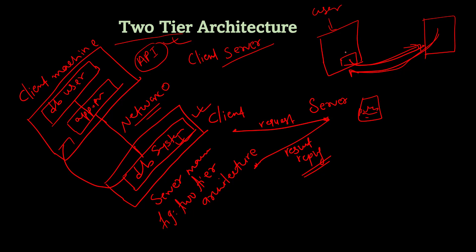To communicate with the DBMS, the client-side application establishes a connection with the server side. The server side is responsible for query processing and transaction management. Two-tier architecture can be used inside any organization where multiple clients access the database server directly.